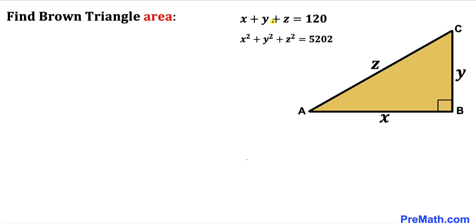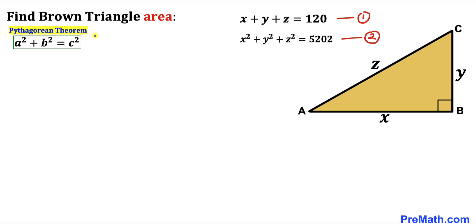Let me label the first equation — X plus Y plus Z equals 120 — as equation number one, and the second equation — X squared plus Y squared plus Z squared equals 5202 — as equation number two. Now let's recall the Pythagorean theorem: A squared plus B squared equals C squared.